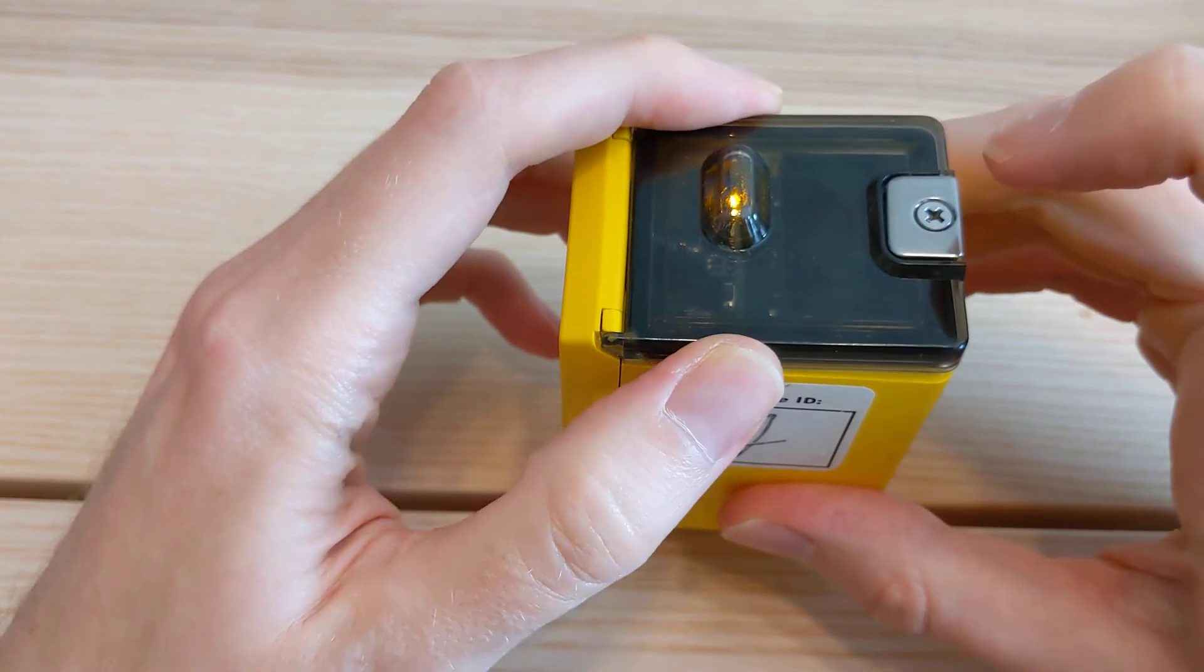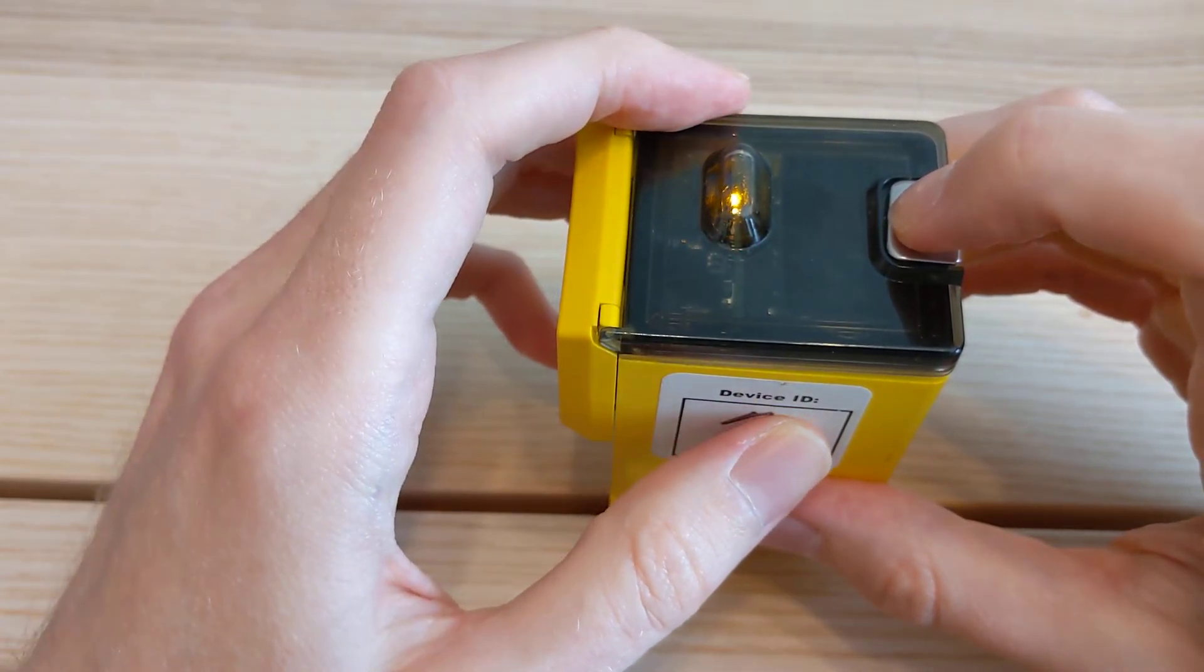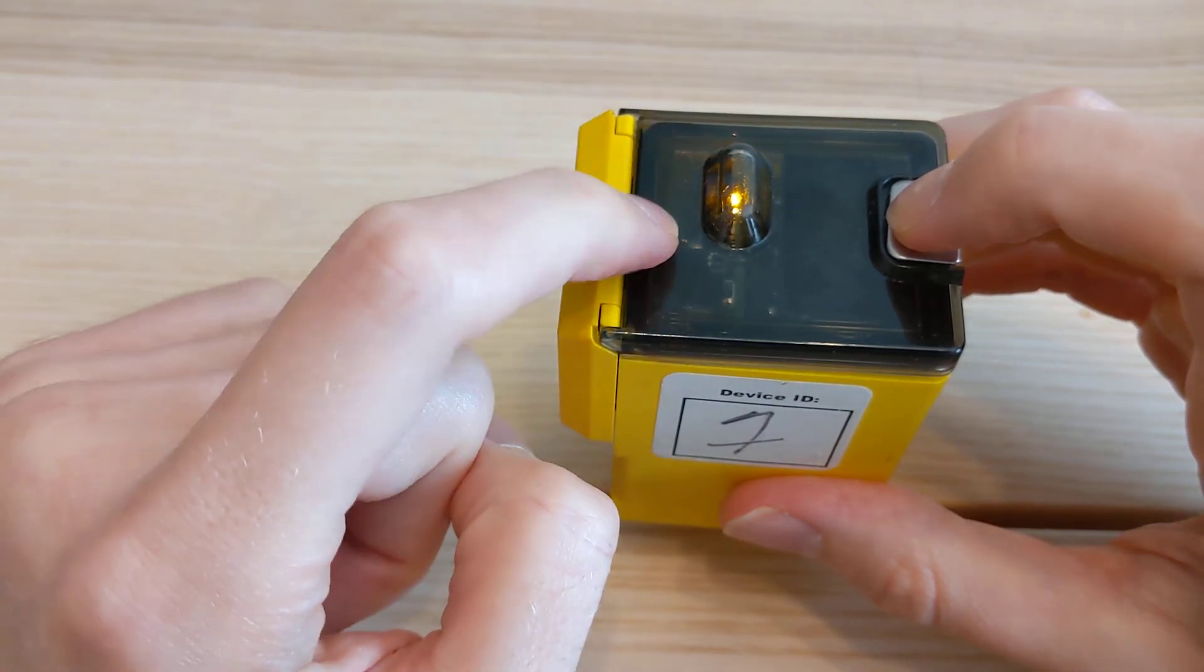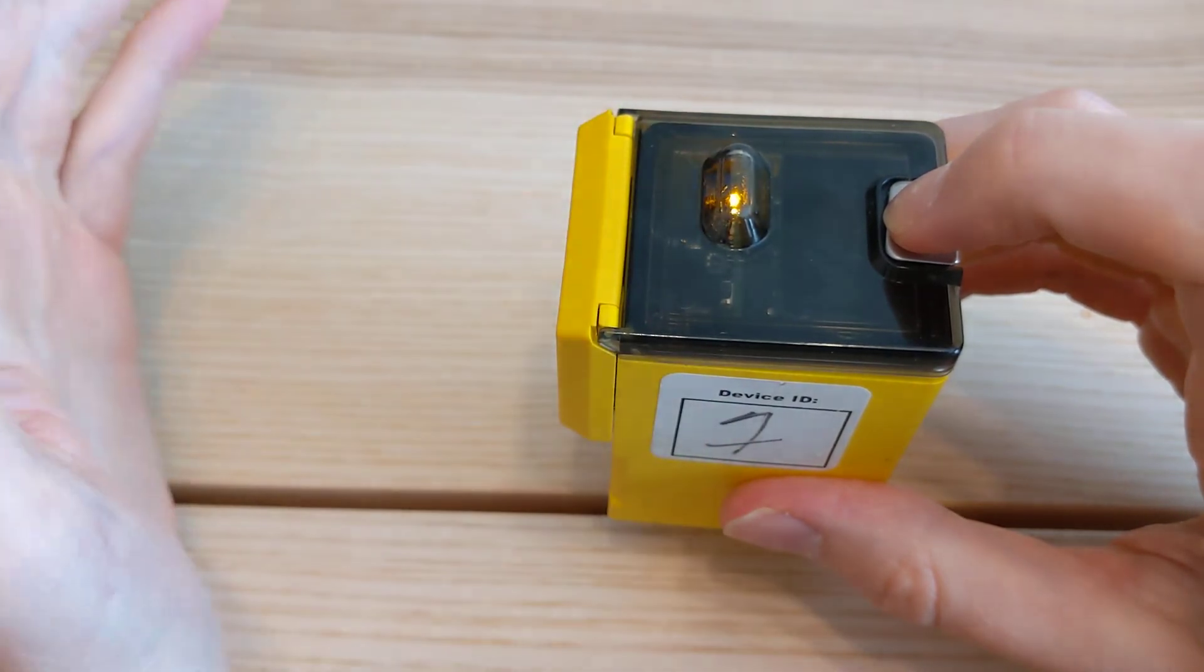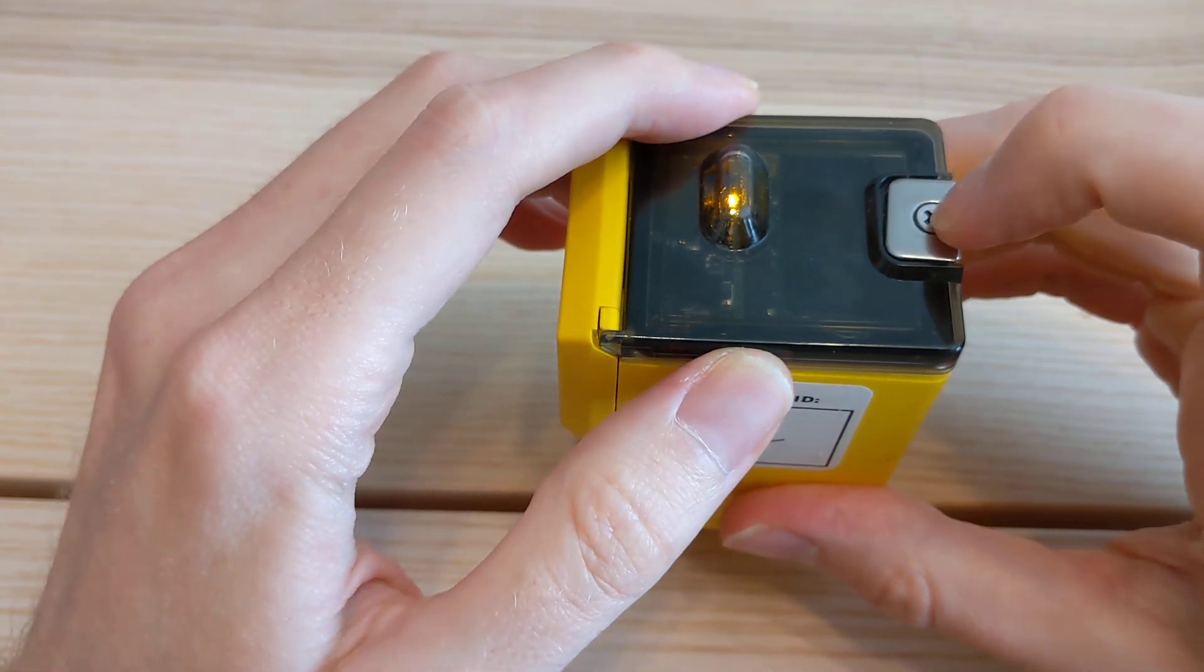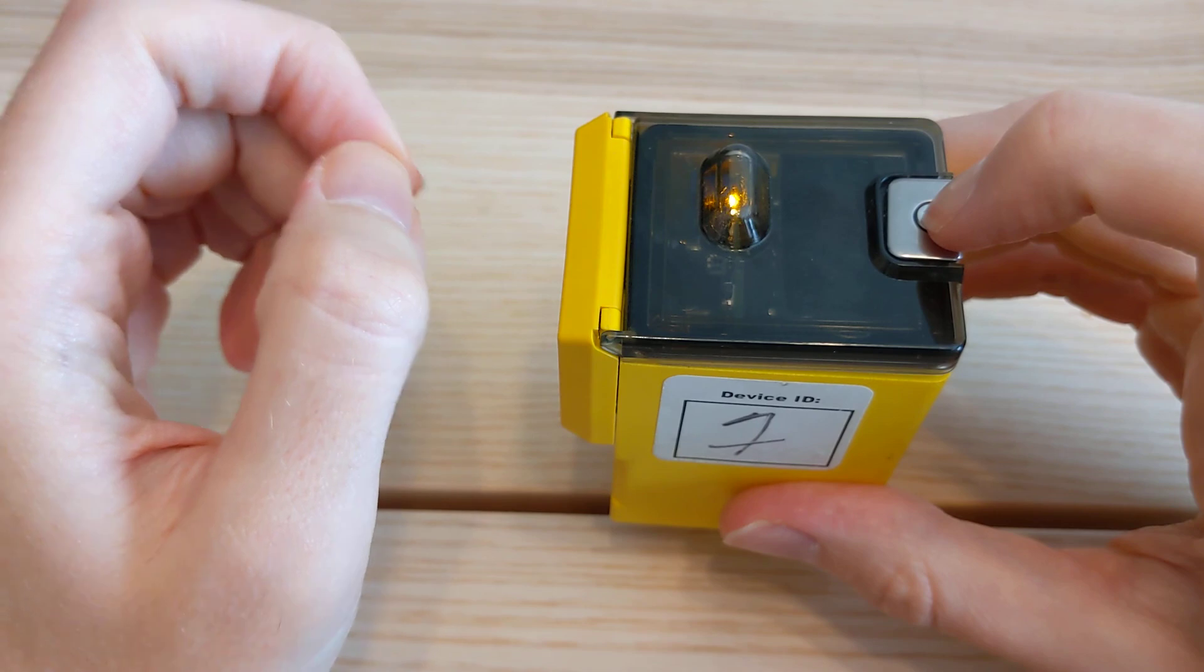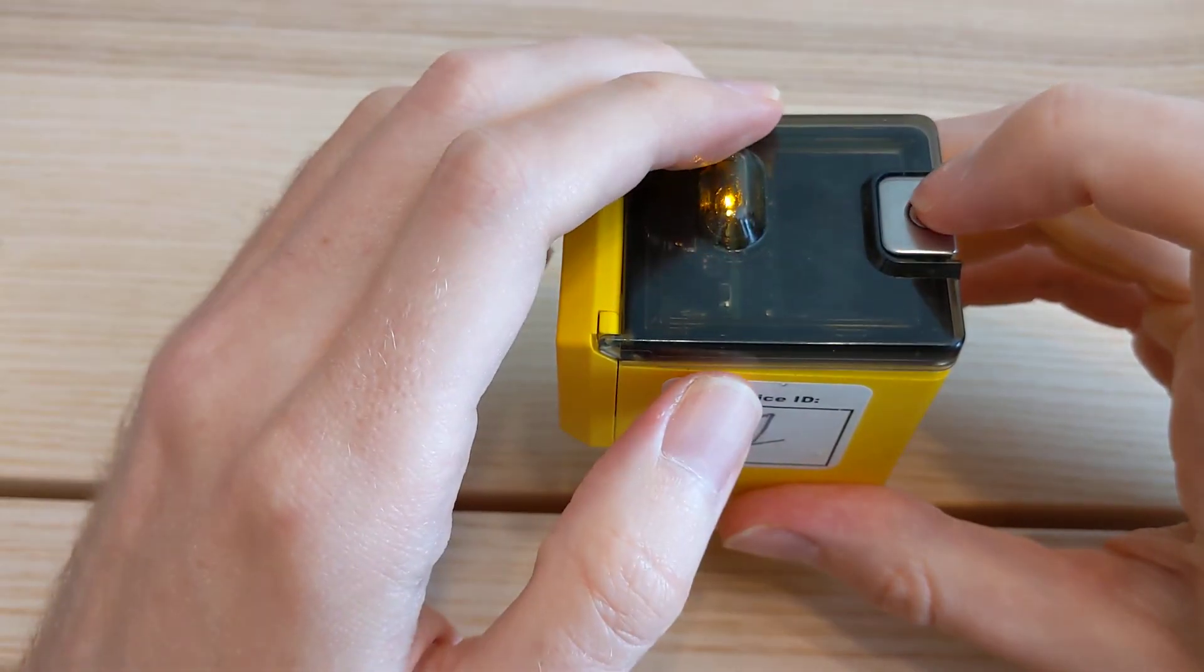Once you're done with that, just screw this back on, and that's the entire installation process. Once we have all these wireless photo eyes attached to equipment and we've verified the LEDs are behaving as they should, just let us know and we'll continue with the rest of the process. At that point we'll audit the data we're receiving over an extended period to ensure accuracy. But for the installation process, that's really all there is to it.